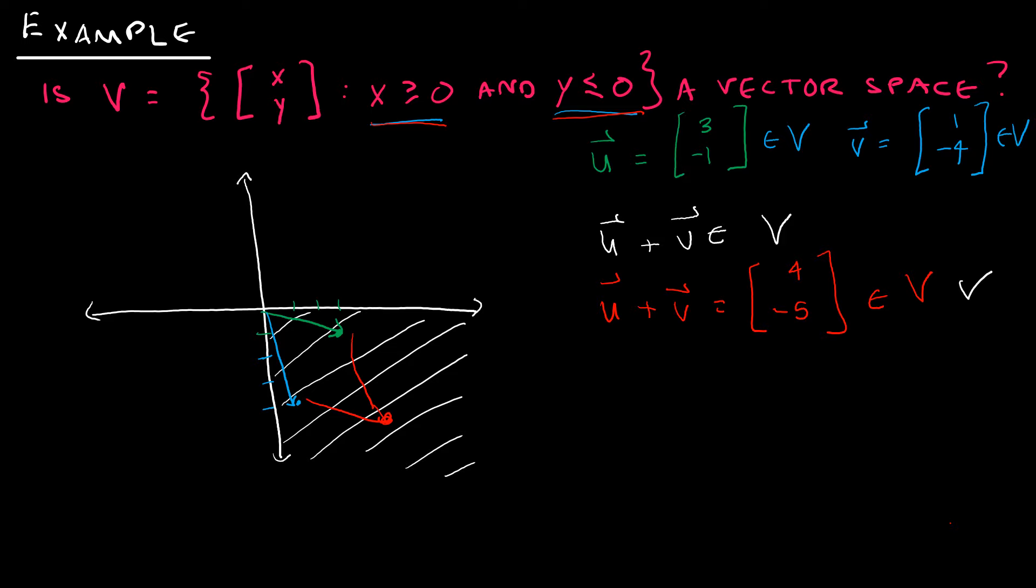What's the next one I said to check? Number 4. Number 4 says that the 0 vector is in V. So looking here, this is or equal to 0, or equal to 0. So that means the 0 vector is in fact in V.